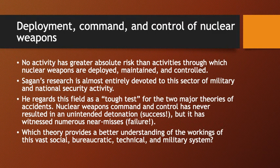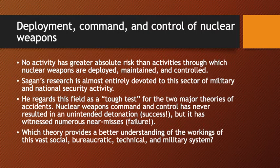The direct topic of Scott Sagan's book concerns a particularly important and complex organization - the one in the United States which deploys, commands, and controls nuclear weapons. It is self-evident that no activity has greater absolute risk than those through which nuclear weapons are deployed, maintained, and controlled. An accidental release or firing of a nuclear weapon is catastrophic in itself, and may also cause escalation of war between two nuclear-armed states.